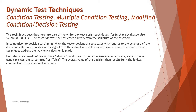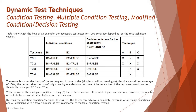Each decision consists of one or more atomic conditions. If a tester executes a test case, these conditions can take values of true or false, and the overall value of the decision results from the logical combination of these individual values. Here is a table showcasing the recommendations and approaches we can apply using these techniques to achieve 100% coverage depending on the test technique chosen.